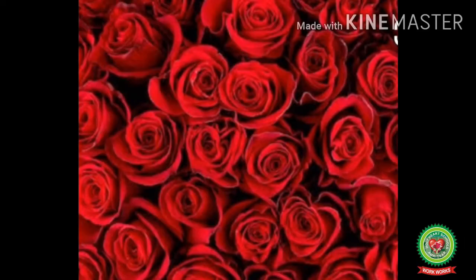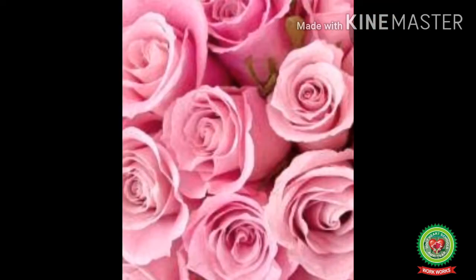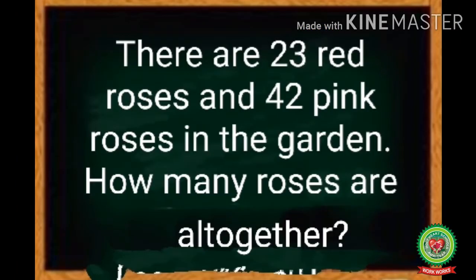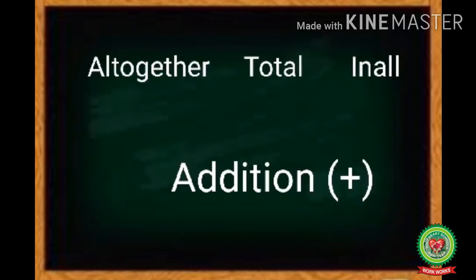Now let us do one more example. There are 23 red roses and 42 pink roses in the garden. How many roses are there altogether? The information given is: 23 red roses and 42 pink roses. We have to find out how many roses there are altogether, meaning we have to find the total number of roses. Again, whenever 'altogether', 'total', or 'in all' appears in the statement, it means we will do addition.